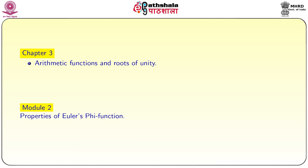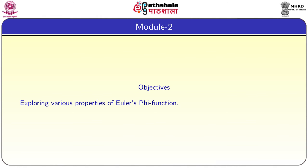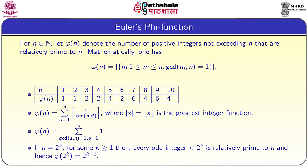We are going to see properties of Euler-Phi function. The objectives of this module are exploring various properties of Euler-Phi function. Euler-Phi function is defined as follows: for n belonging to the natural numbers, φ(n) denotes the number of positive integers not exceeding n that are relatively prime to n. Mathematically, φ(n) equals the cardinality of the set {m : 1 ≤ m ≤ n and gcd(m, n) = 1}.